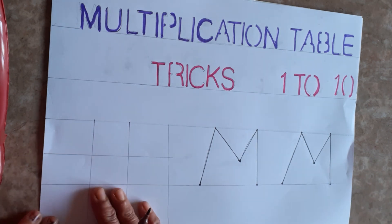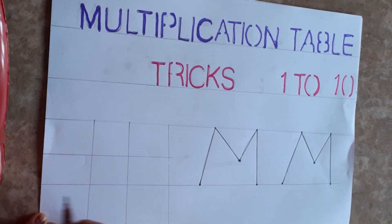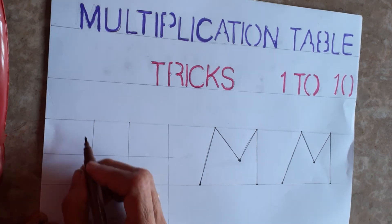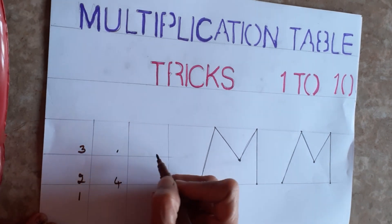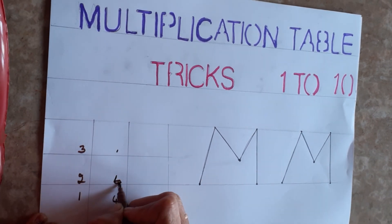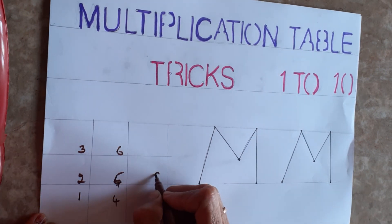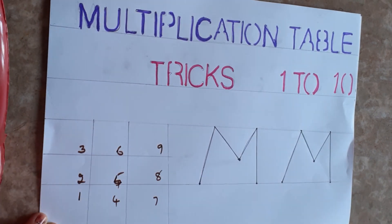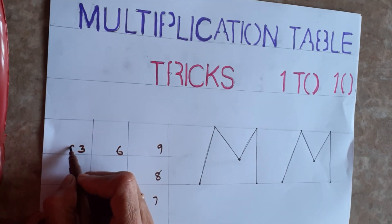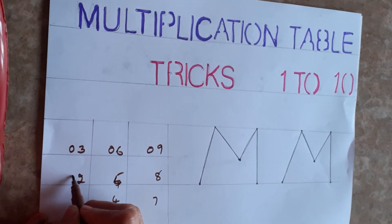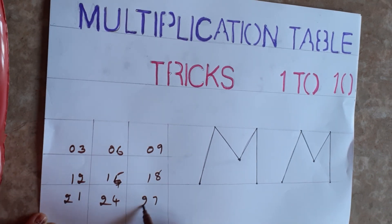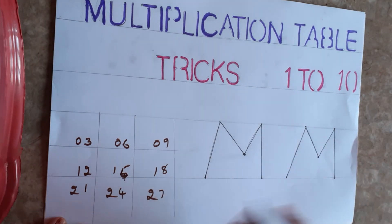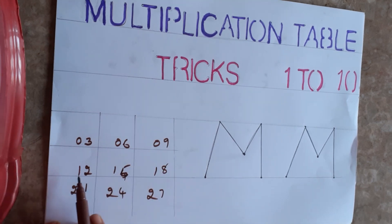Just draw three boxes like this — one, two, three — then four, five, six, seven, eight, nine. In the first line write all zeros: zero, zero, zero, zero. Then write one, one, one. Then two, two, two. That's all for the third table setup.